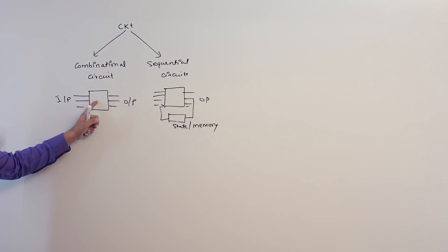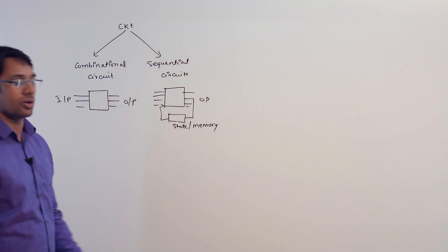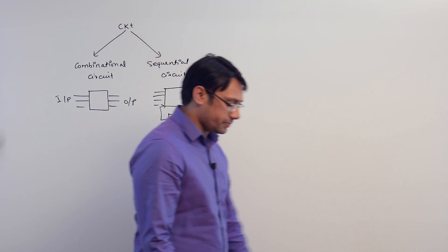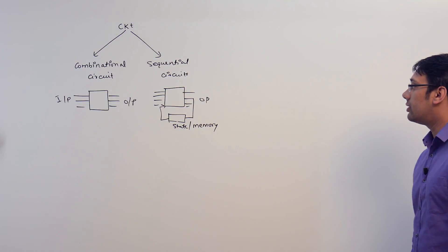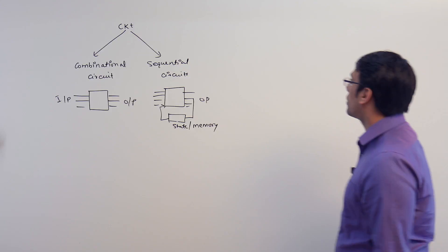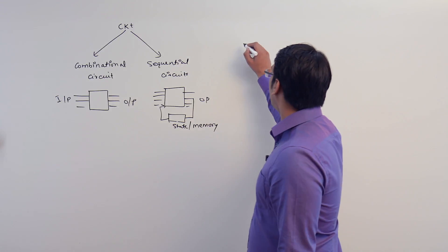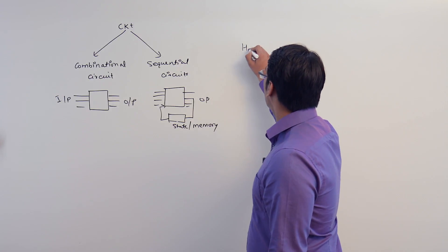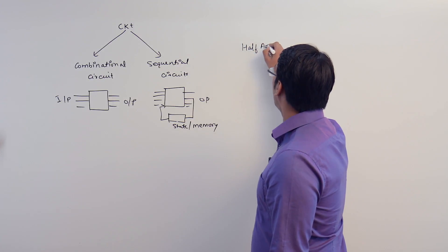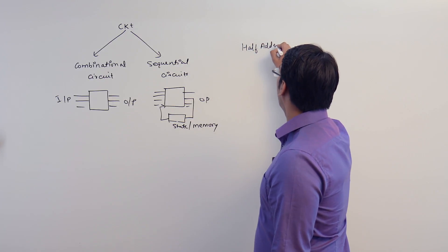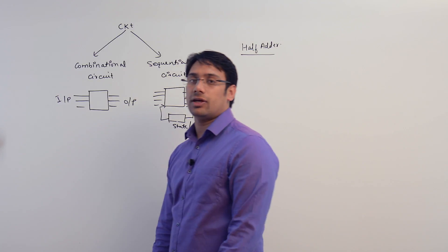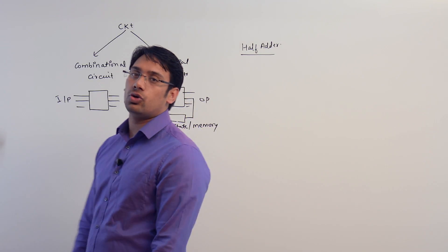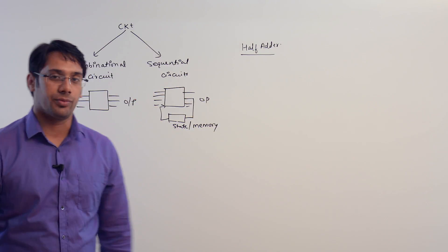In the case of a combinational circuit, the current output is only dependent on the current input. The first combinational circuit we are going to make is the half adder. In the half adder, we are going to add two bits of information.